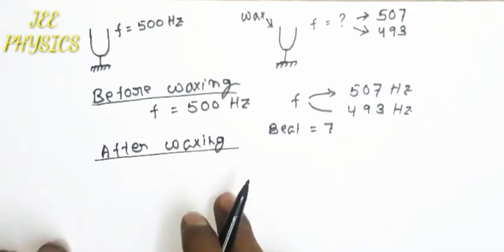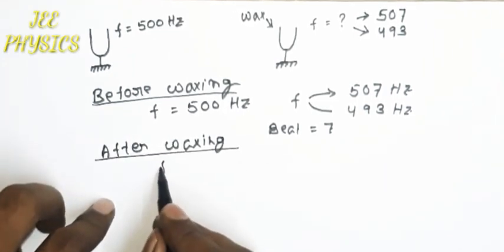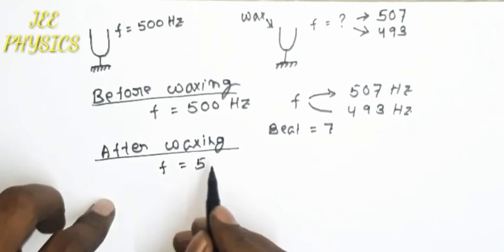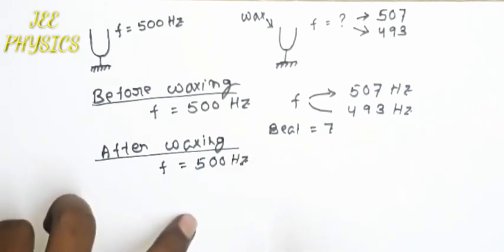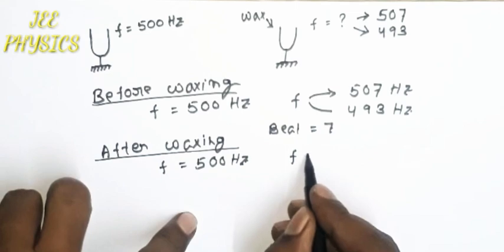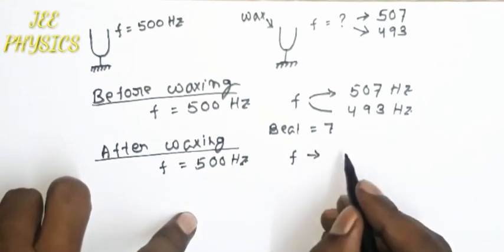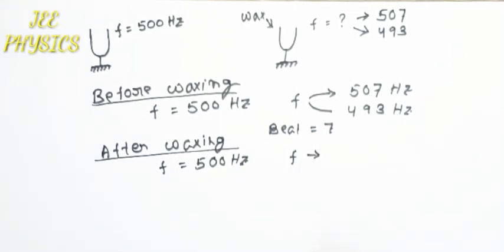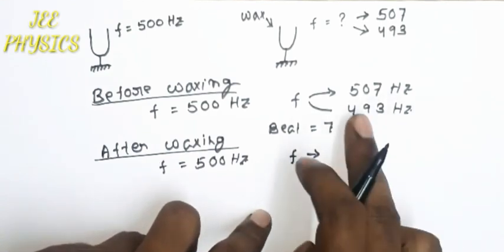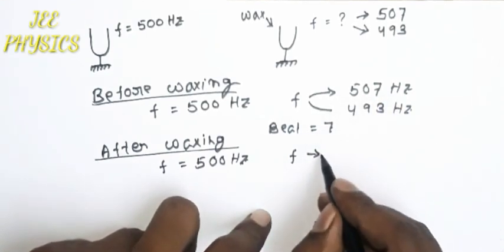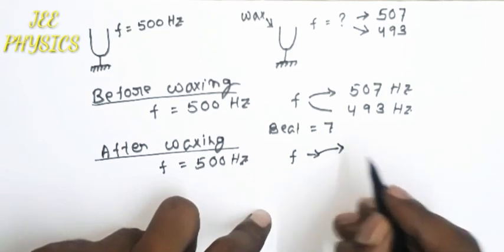Since the unknown is waxed, the frequency of the known tuning fork remains unchanged at 500 Hz, and the frequency of the unknown becomes less than 507 Hz. In the question it is given that the beat count decreased — let's say it decreased to 5.